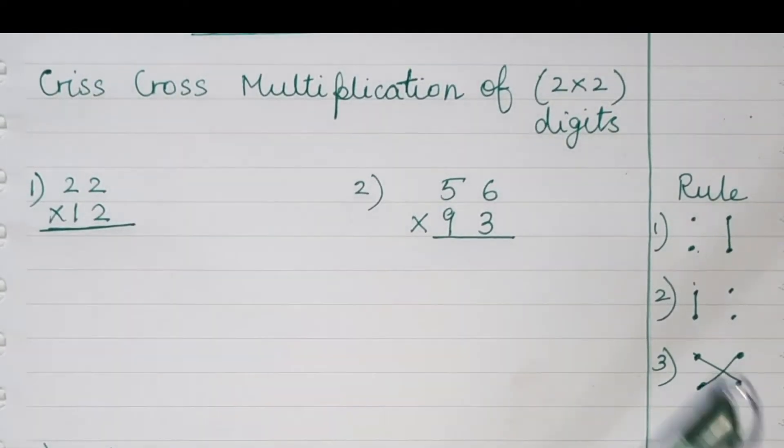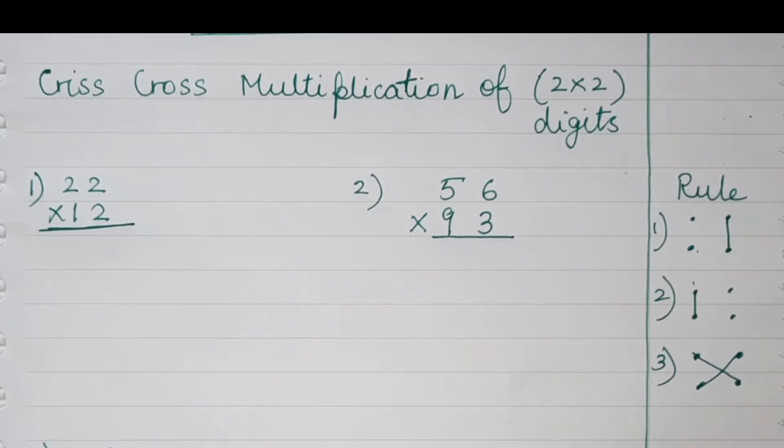Hello everyone, welcome back to my channel. Today we'll do criss-cross multiplication of two by two digits. You just need to follow three steps to do these sums. You'll get the answer within just a few seconds. Rule number one...